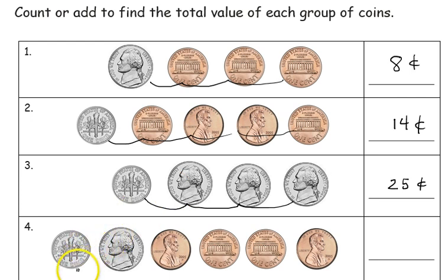And the next question, I have a dime, so I'm going to start with 10, 15, 16, 17, 18, 19. Or I can think in my head, 10 and 5 is 15, and 4 pennies is 19.